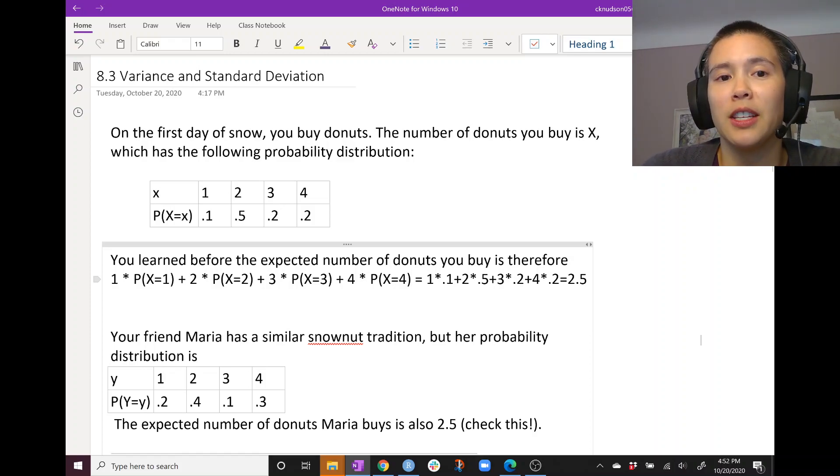Then we end up with an expected value of 2.5 donuts. In other words, if we did this snownut tradition year after year with this same probability distribution, the long-run average number of donuts that you buy and eat is 2.5.